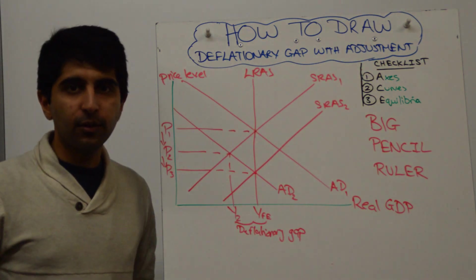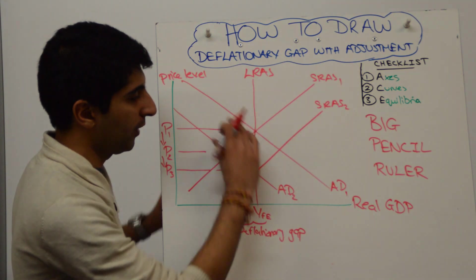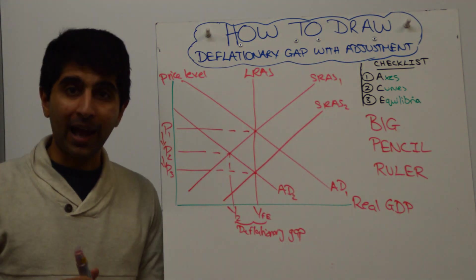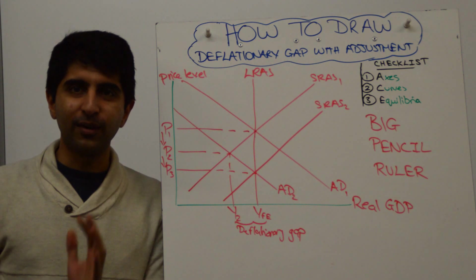Then go through your checklist. All we need to check here is that we've labelled the axis, the curves, and the relevant equilibrium. And we have, there is a lot to label on this diagram, so don't forget your labels.